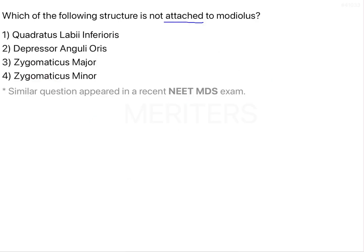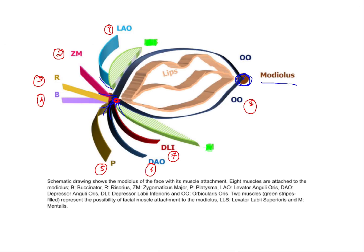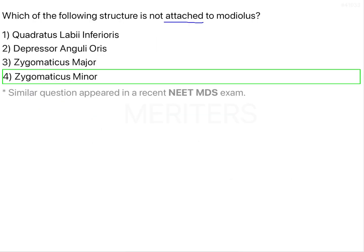Going back to the question and looking at the options against the schematic diagram, zygomaticus minor is not present in these attachments. So the answer to the question is zygomaticus minor — the muscle which is not attached to the modiolus.